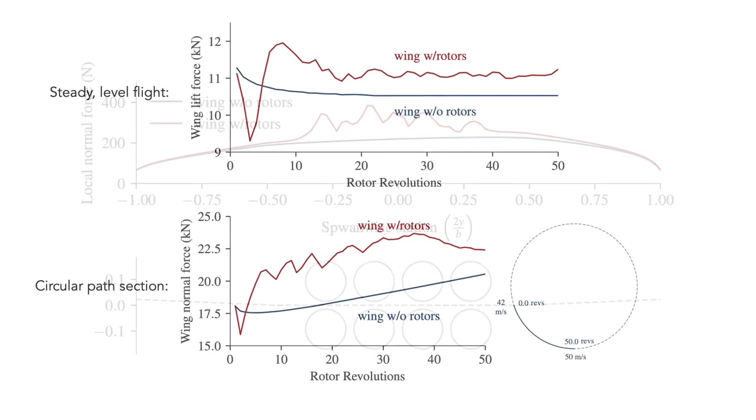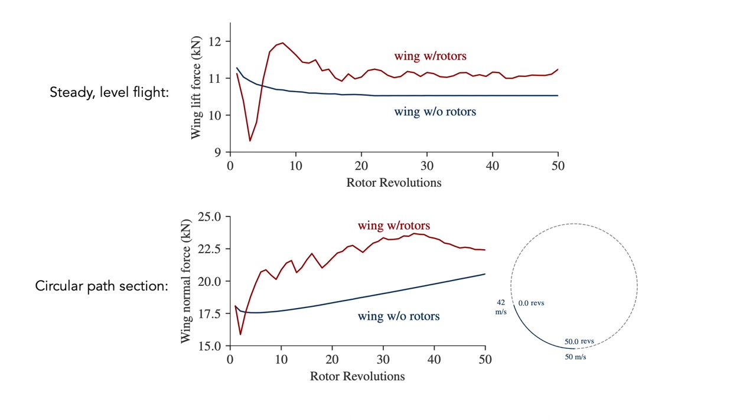As mentioned, this increase was present for both the steady-level and crosswind flight cases, though we saw a greater increase in the normal force in the crosswind case than we did in the lift force in the steady-level case. It should also be noted that the circular path case did not have a constant velocity, but rather a linearly changing velocity as the windcraft travels from a higher portion of the path to a lower one.